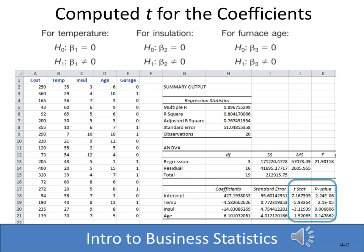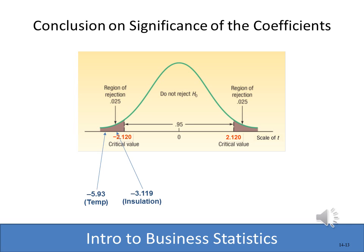You can also evaluate significance using the p-value. Excel shows the temperature p-value is very close to zero, and insulation's p-value is also very close to zero, but age has a p-value of 0.14, which is greater than our significance level of 0.05. The next slide shows a graph of how each t-stat falls within the reject or do-not-reject area based on the critical value.